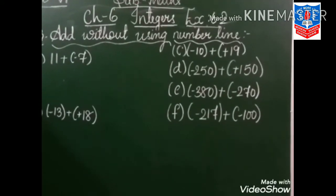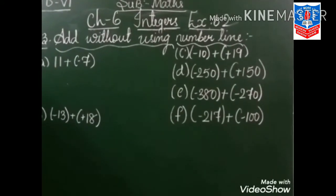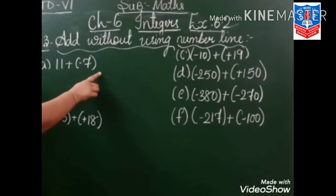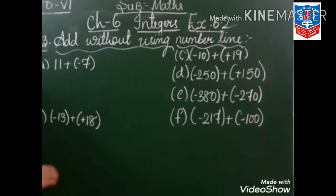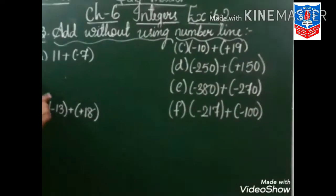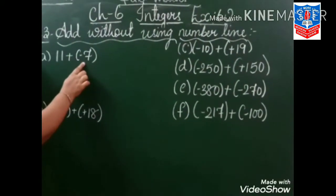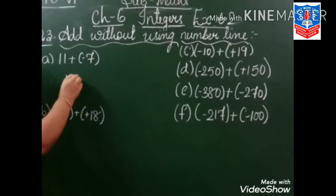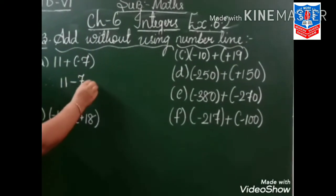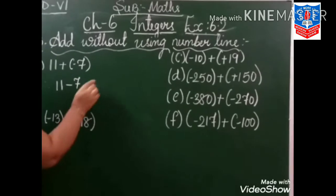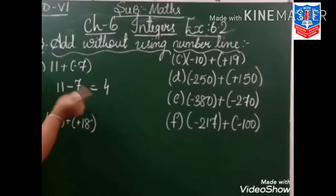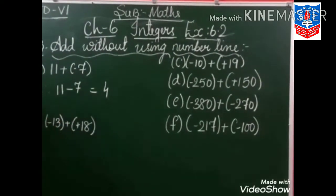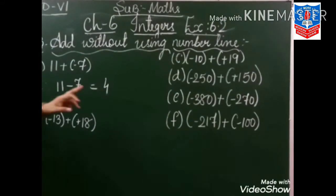Question number 3: add without using the number line. 11 plus minus 7. Now see, in the introductory part we learned that plus minus is minus. So 11 minus 7 is 4. And we will put the greater sign — the greater sign is plus. So our first answer is 4.